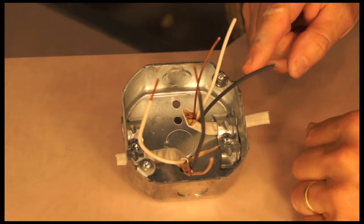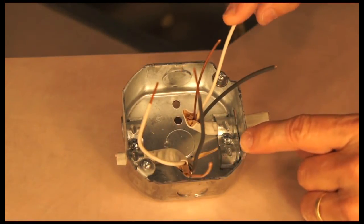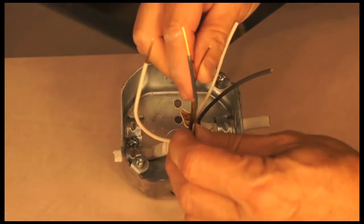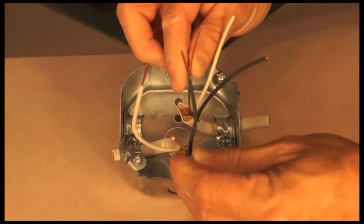So I'm simply going to hook black to black, white neutral to the white neutral, and I'm going to tie the two grounds together.